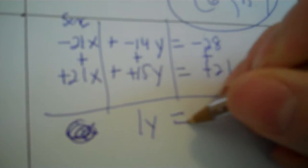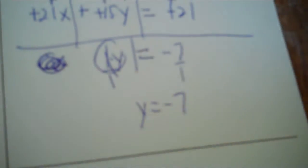So negative 21 plus 21 is 0. Negative 14 plus 15 is 1y. Negative 28 plus positive 21 is negative 7. Now you're good to go. Divide by 1. And you've got negative 7. So y equals negative 7.